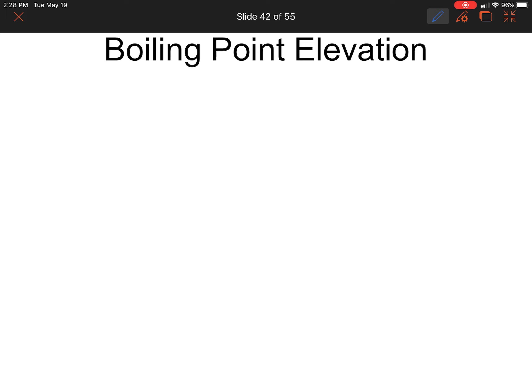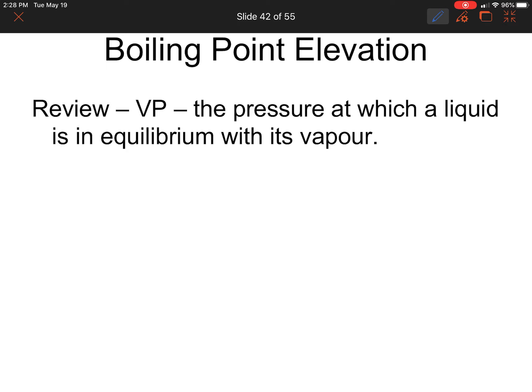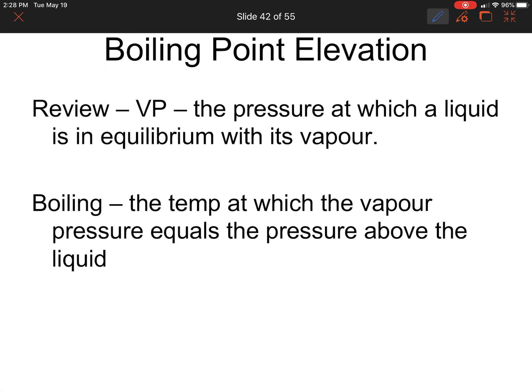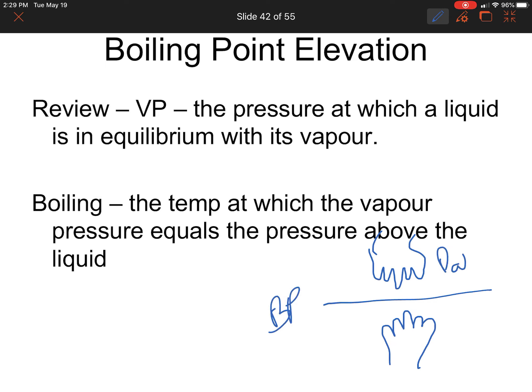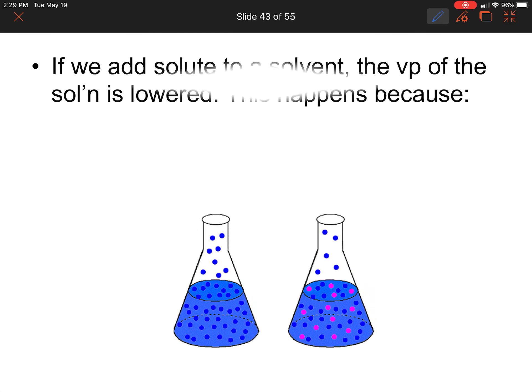We also have boiling point elevation. Water boils at 100°C, and we can elevate that by adding solute — adding salt to water when cooking raises the temperature slightly. Let's review vapor pressure: it's the pressure at which a liquid is at equilibrium with its vapor. Boiling is the temperature at which vapor pressure equals the pressure above the liquid — think of it as two hands meeting. That meeting point is the boiling point: P-atmosphere equals P-vapor.